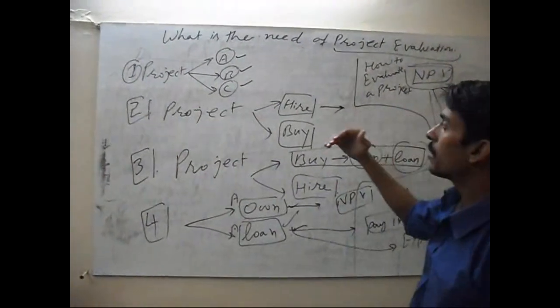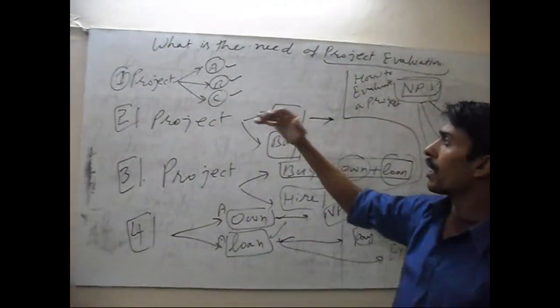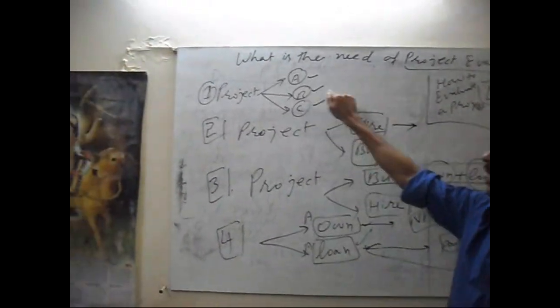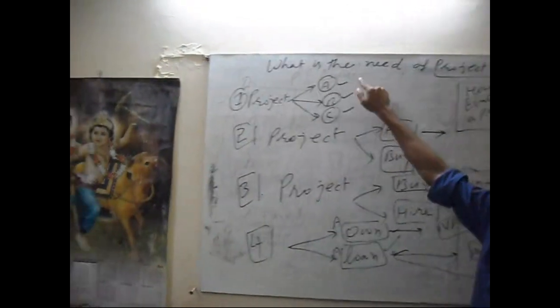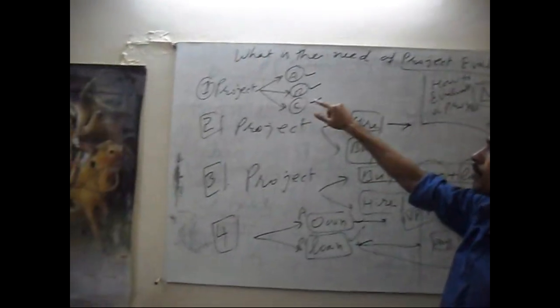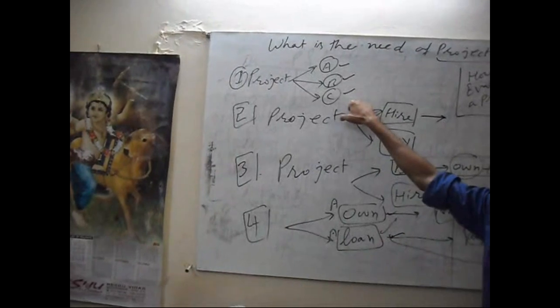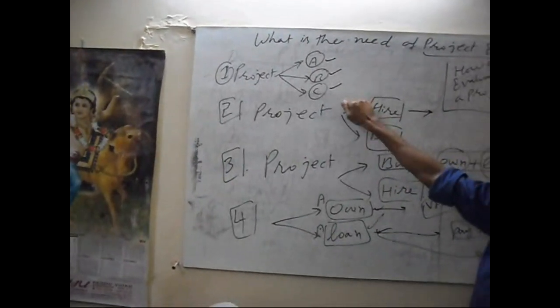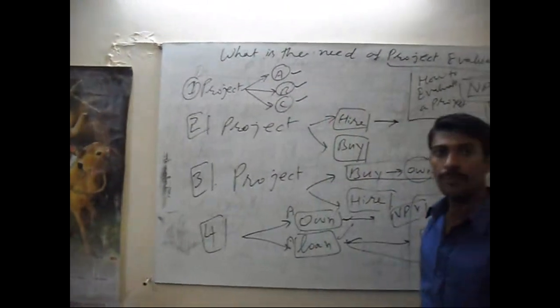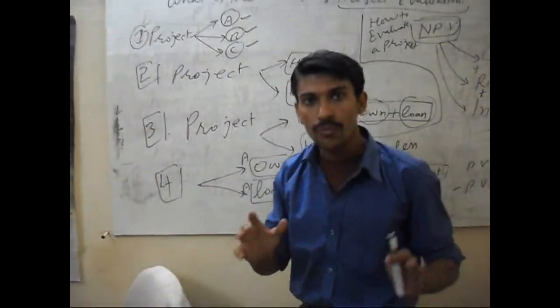If any project's net present value will be higher, we accept that project. Suppose B's NPV is higher than A's project's NPV or C's project's NPV. So we will accept B project. Okay? Thank you very much.